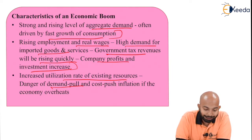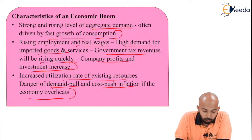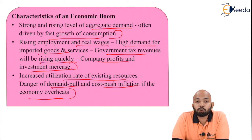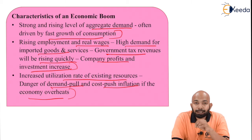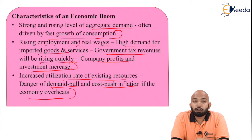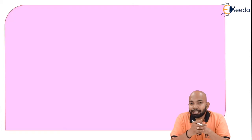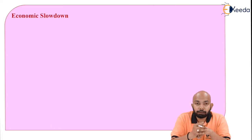Increased utilization rate of existing resources means there is a danger of demand-pull and cost-push inflation as the economy overheats. This is one specification to understand — if you figure out that the economy is overheated because of demand-pull and cost-push pressures, the cost required to maintain production for consumption can overheat the economy over a period of time. Hence, that needs to be controlled at all times.